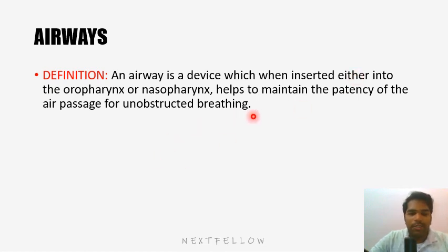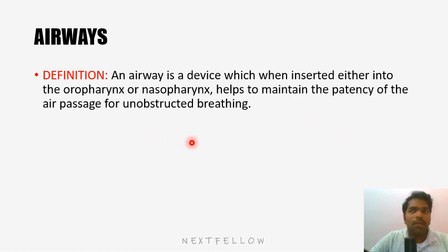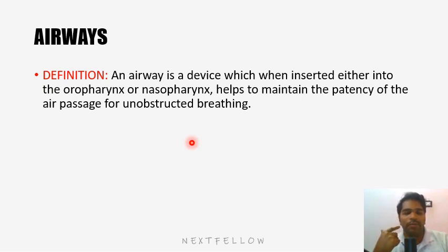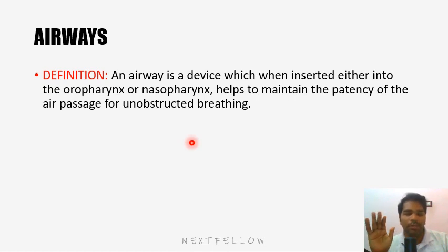First, let's see the definition of airway. An airway is a device which, when inserted either into the oropharynx or nasopharynx, helps maintain the patency of the air passage for unobstructed breathing. We insert it either into the mouth or into the nasal cavity to keep the upper airway open — from the oropharynx and nasopharynx through the pharynx into the trachea. It is inserted into the pharynx, not deeper, so it is a supraglottic device.